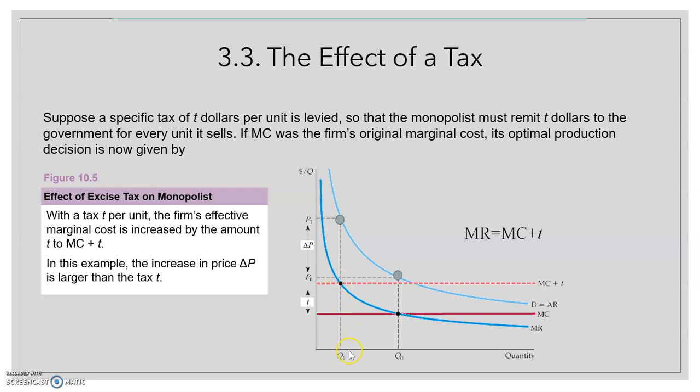And if we draw a vertical line up to the average revenue, we find that the price increases compared to the original one before the tax. So this increase in price, we see that is larger than the tax in this case.